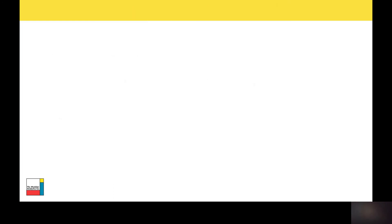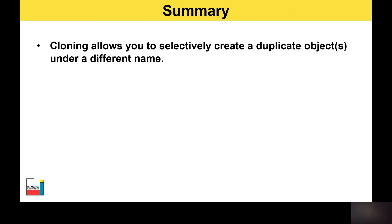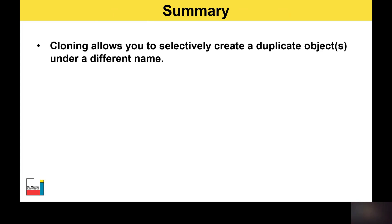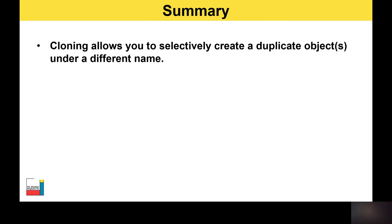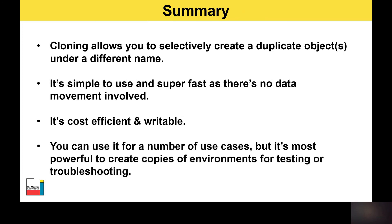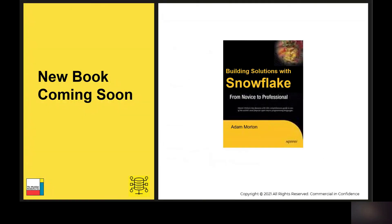In summary, cloning allows you to selectively create a duplicate object under a different name. It's simple to use, super fast, and there's no data movement involved. It's cost-efficient because you're not physically moving the data and using additional storage, and it's writable. It's most powerful for creating copies of environments for testing or troubleshooting and will save you a lot of time, especially if you're coming from a traditional relational database world. I've also got a new book coming soon, probably early next year. Hope you found the video useful — don't forget to like and subscribe, drop a comment on topics you'd like me to cover, and new videos will be coming every week.